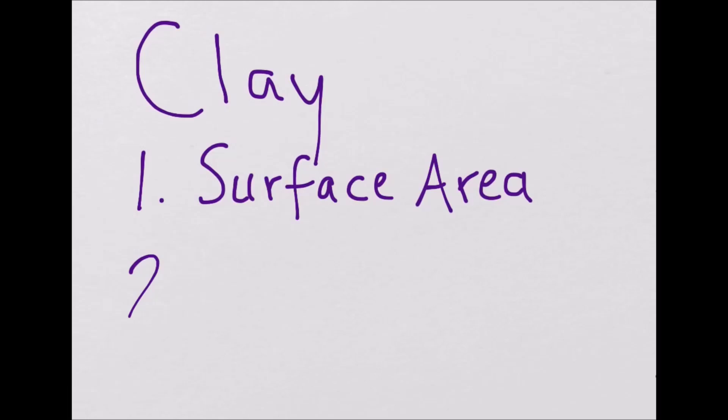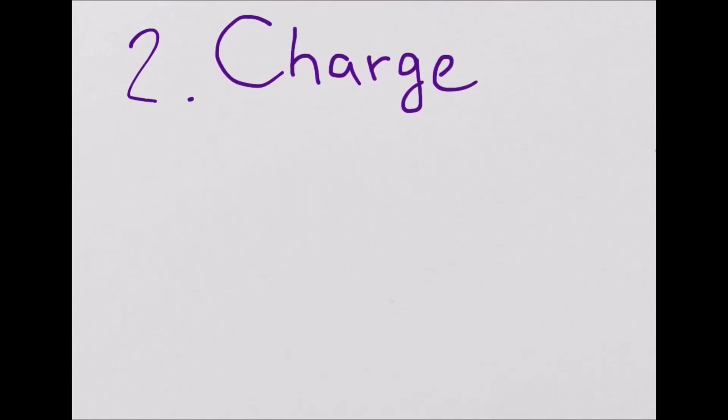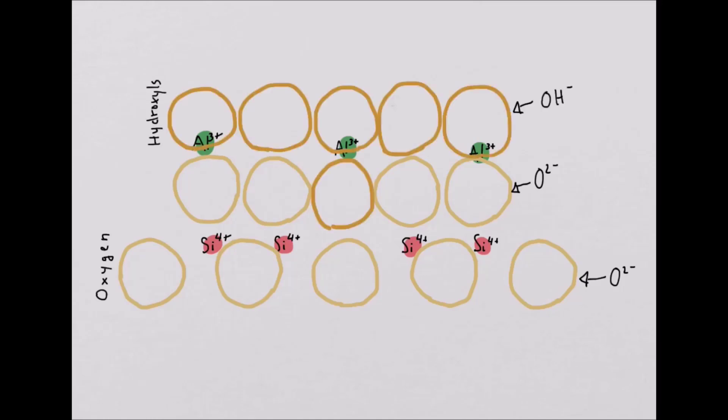Second, clays have charge. Clay minerals are formed in sheets of positive charged cations like silicon and aluminum, surrounded by negative charged oxygen and hydroxyls. Through a process called isomorphous substitution, cations of similar size can replace each other in these structures when they form.